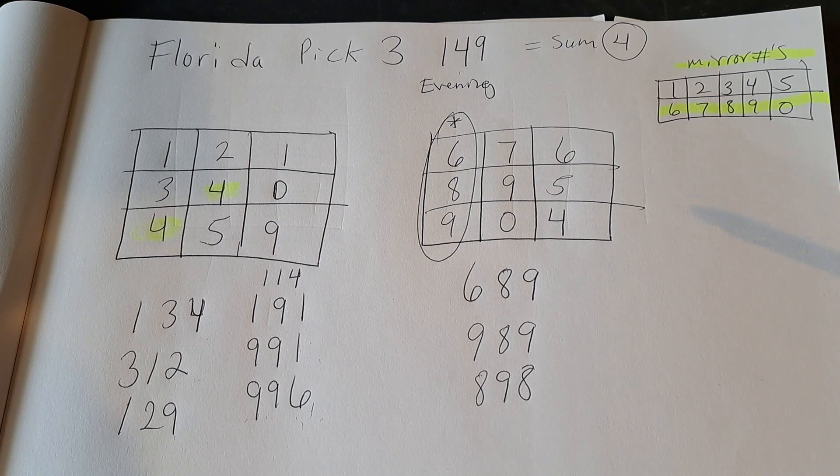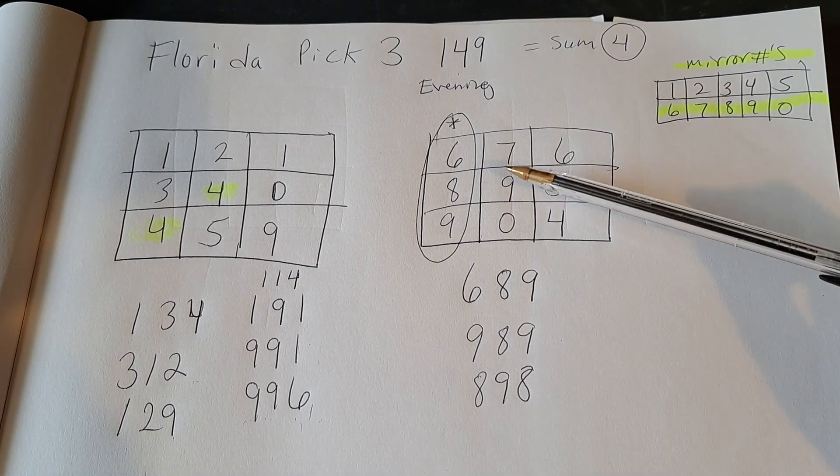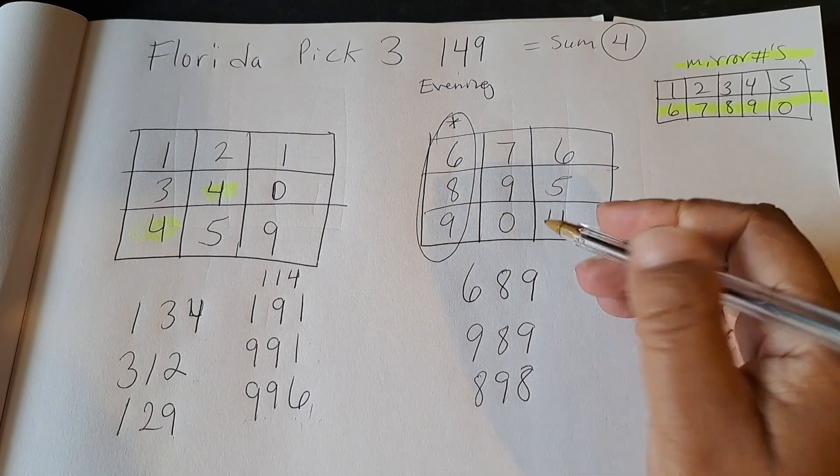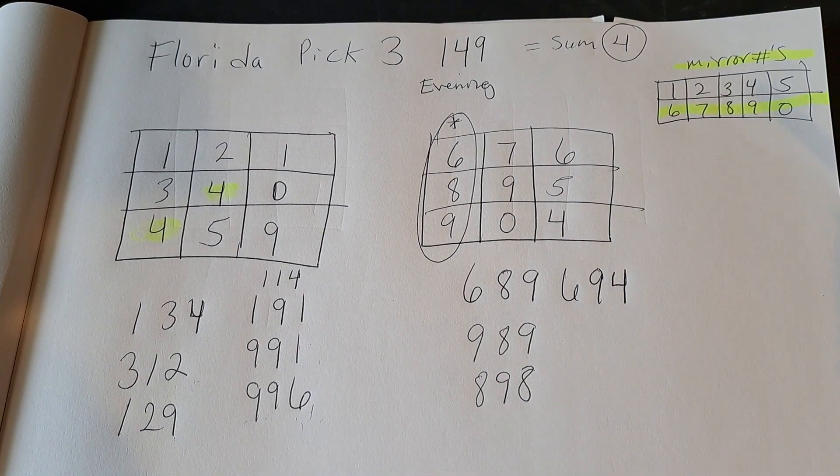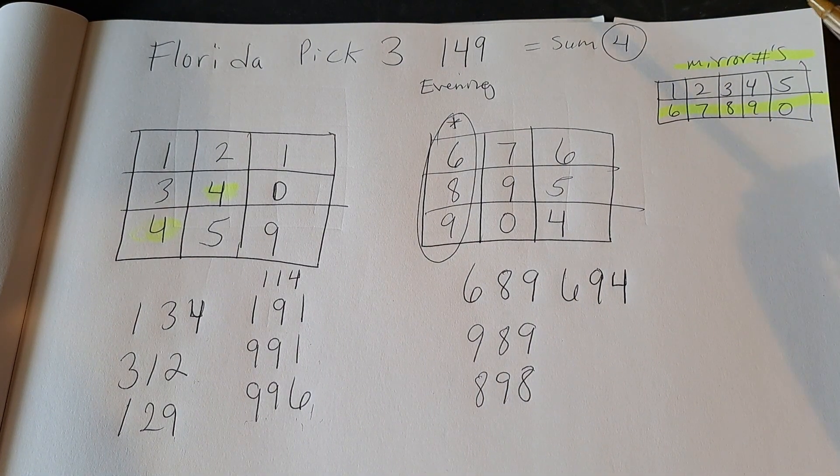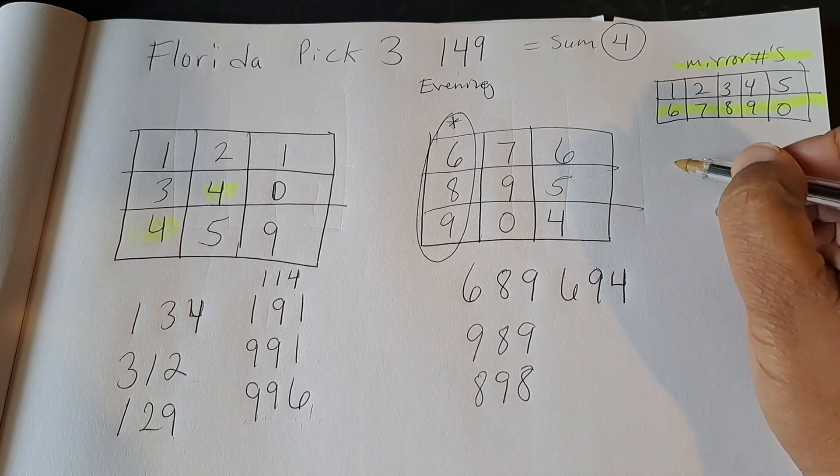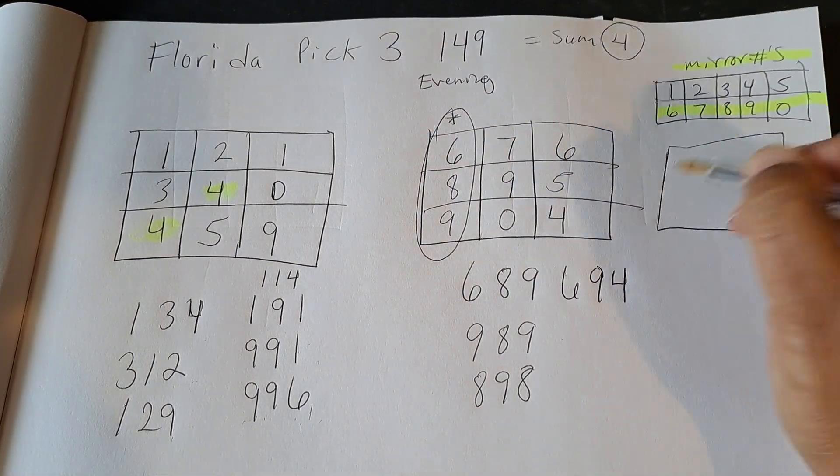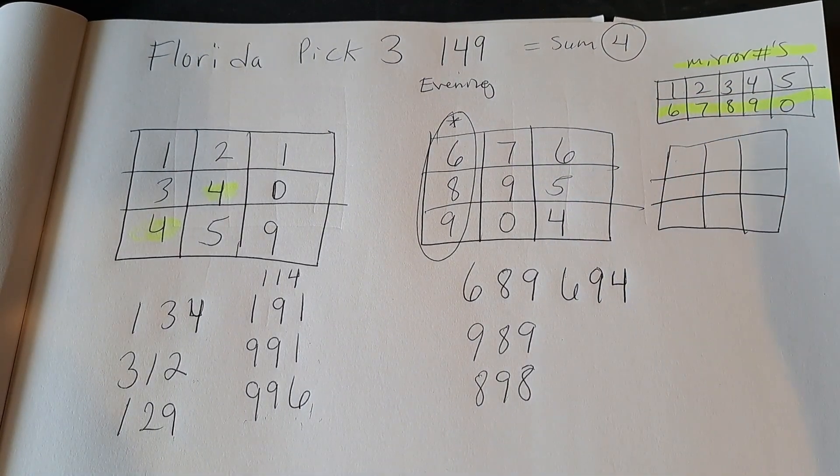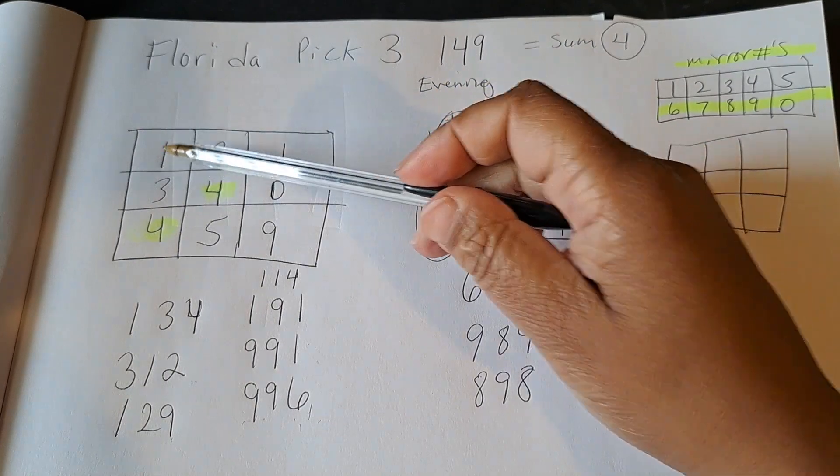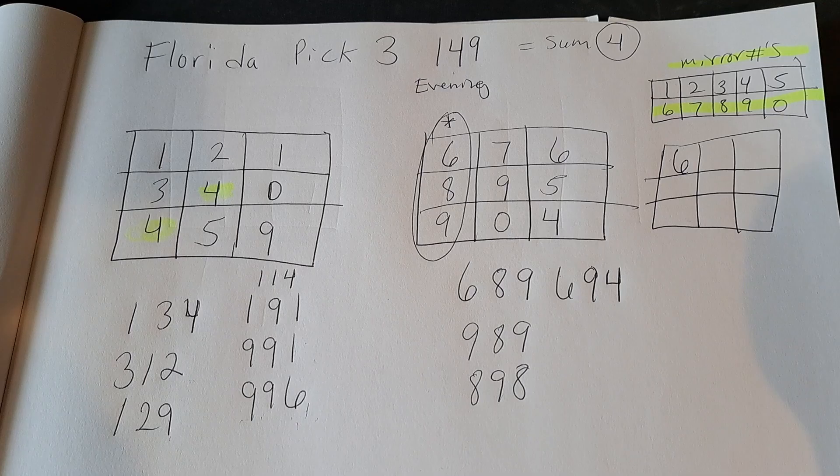Okay guys. So when I did the tic-tac-toe workout over here I also like that 694 which is the mirror number of the 149. I like that one as well. So when I did the mirror number over here I'm going to show you guys how I did it in case you're not too familiar with the mirror numbers. So the mirror number of the number 1 was 6. Put the 6 here.